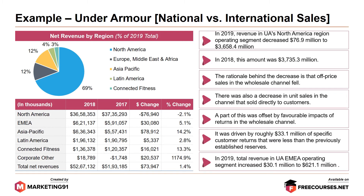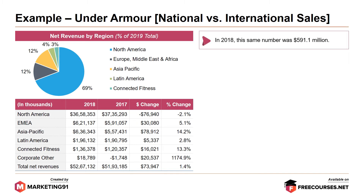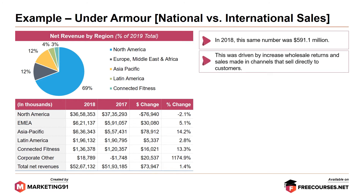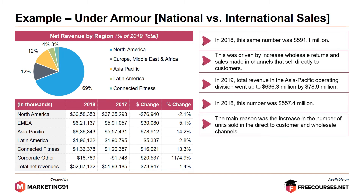In 2019, total revenue in Under Armour's EMEA operating segment increased by $31.1 million to reach $621.1 million. In 2018, the same number was $591.1 million. This was driven by increased wholesale returns and sales made in channels that sell directly to customers. In 2019, total revenue in the Asia-Pacific operating division went up to $636.3 million, an increase of $78.9 million. The number in 2018 was $557.4 million. The main reason was the increase in the number of units sold in the direct-to-customer and wholesale channels.